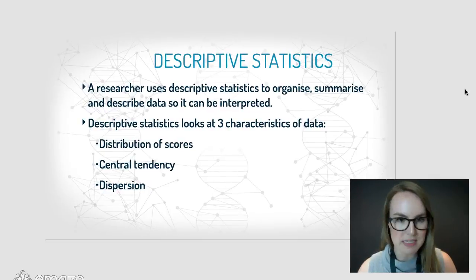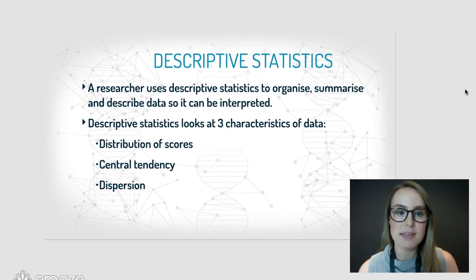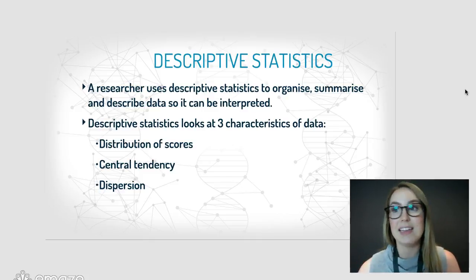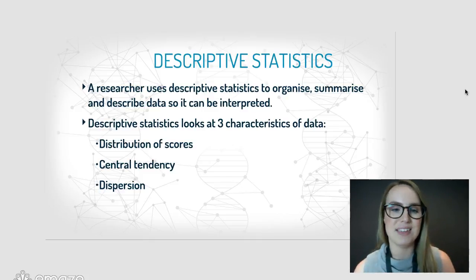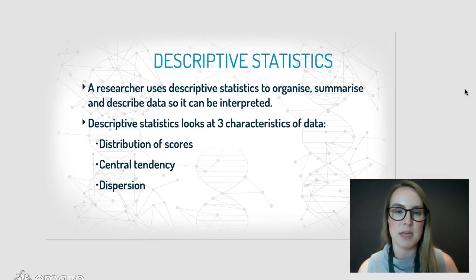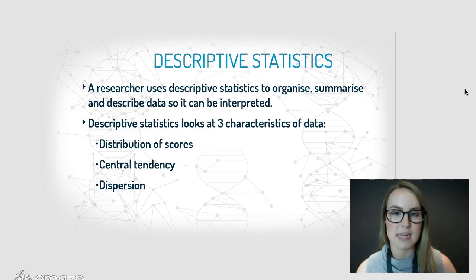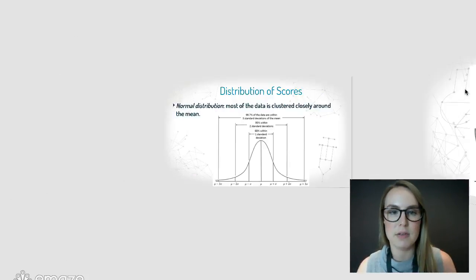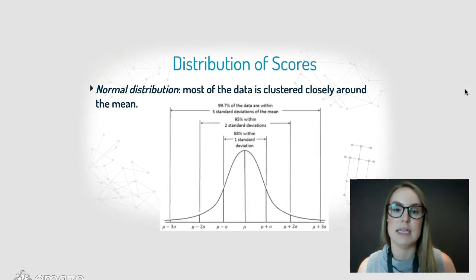With descriptive stats, a researcher uses this to organize, summarize, and describe data so that it can then be interpreted and you can understand the meaning. These statistics look at three characteristics of data: number one, distribution of scores; number two, central tendency; and number three, dispersion.